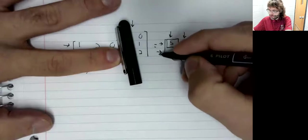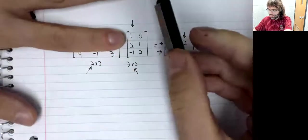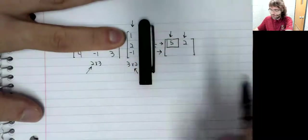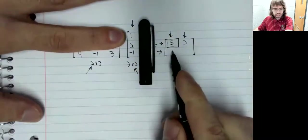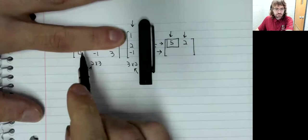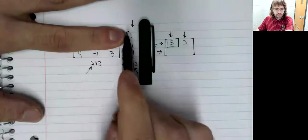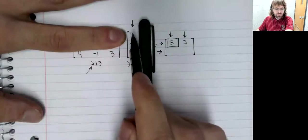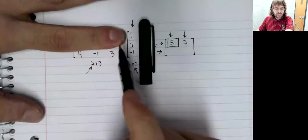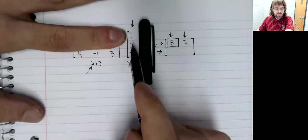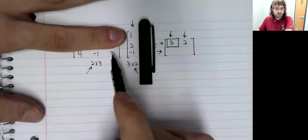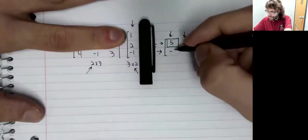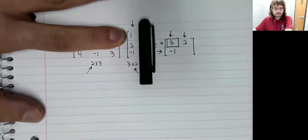Second row, first column. This entry here, we use the second row, first column. Four times one is four. Minus two is two. Minus three is negative one.